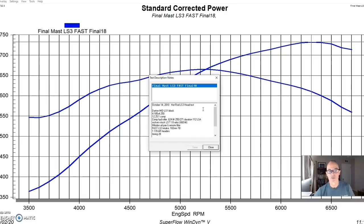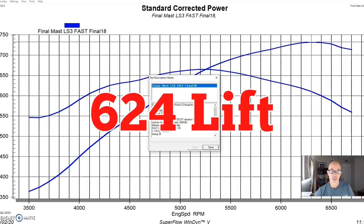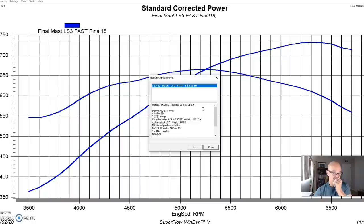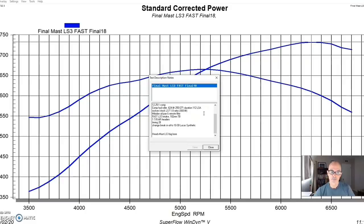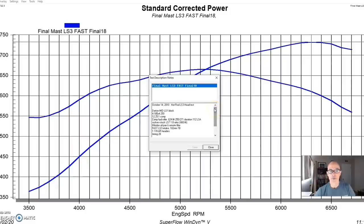It also had a much bigger camshaft that had a 255-271 at 50, 624 lift, and a 112-degree lobe separation angle. This particular combination had Mast LS3 heads on it, the big bore LS3 heads, and then a Milodon oil pan, inch and 7-8 headers controlled by a Holley HP management system. So this combination was working really well.